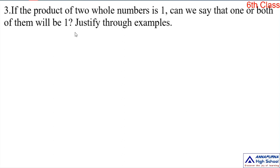We go to the next problem, that is the third one. If the product of two whole numbers is 1, can we say that one or both of them will be 1? Justify through examples. We already know that on multiplying any whole number by 1, we get the same whole number as the result. Let us start the solution.